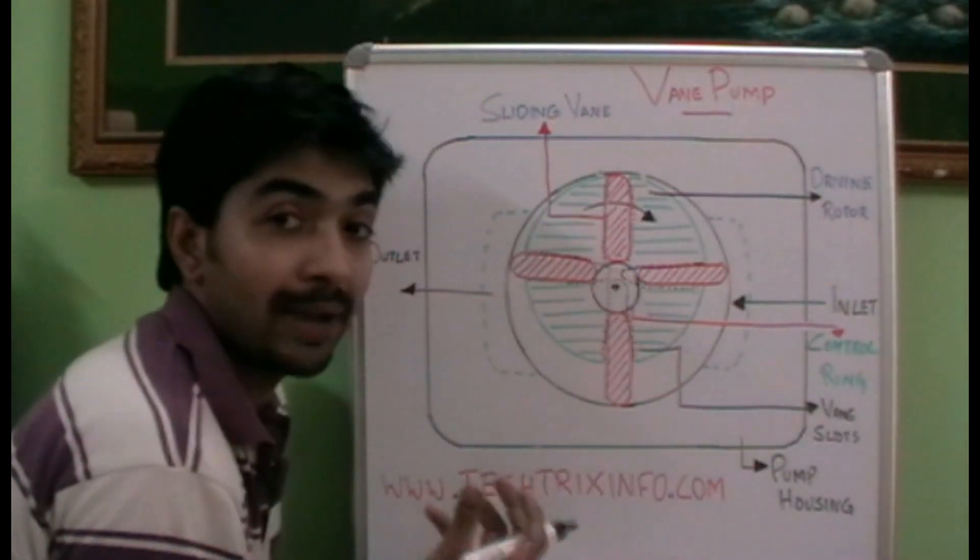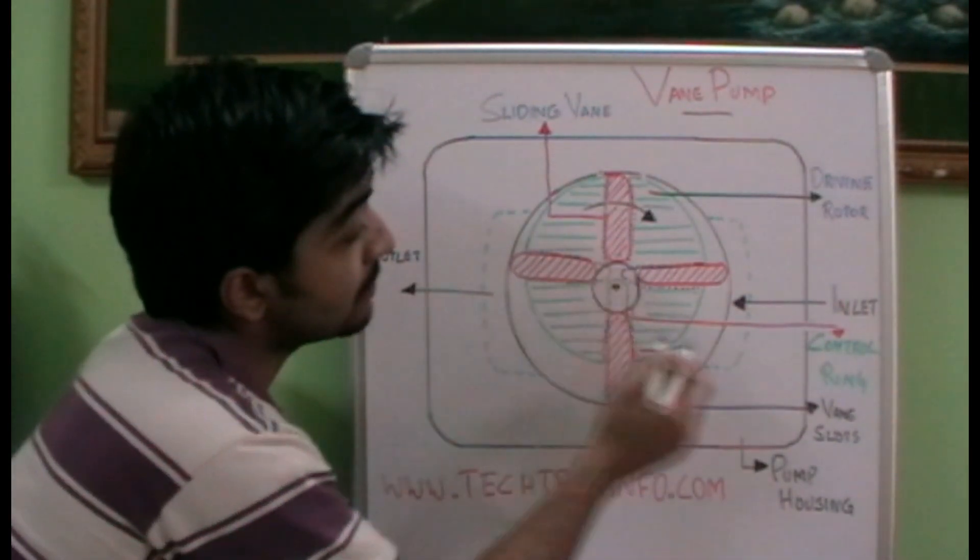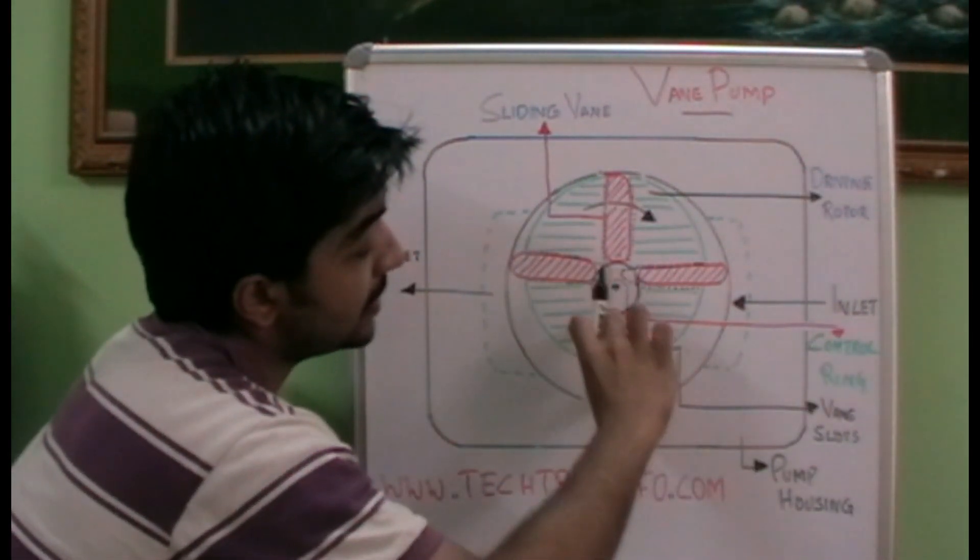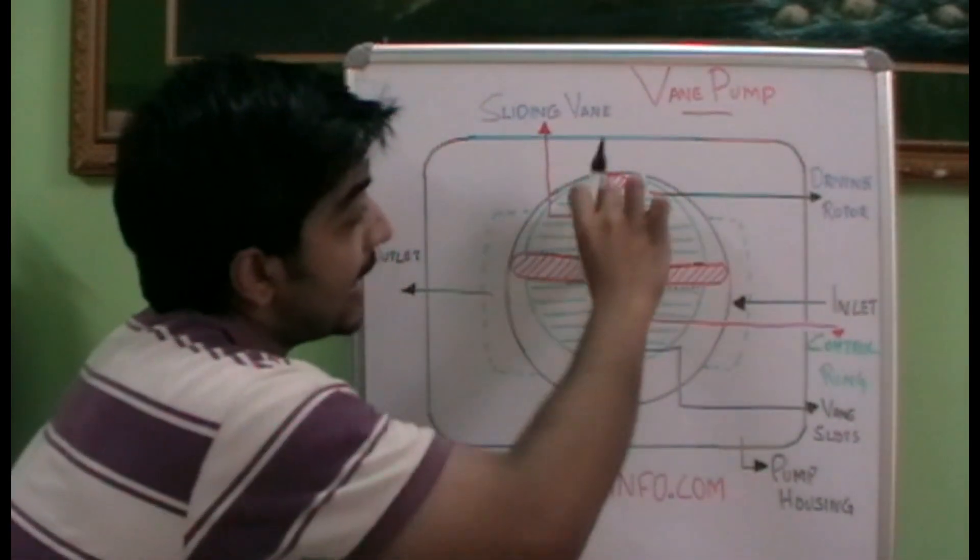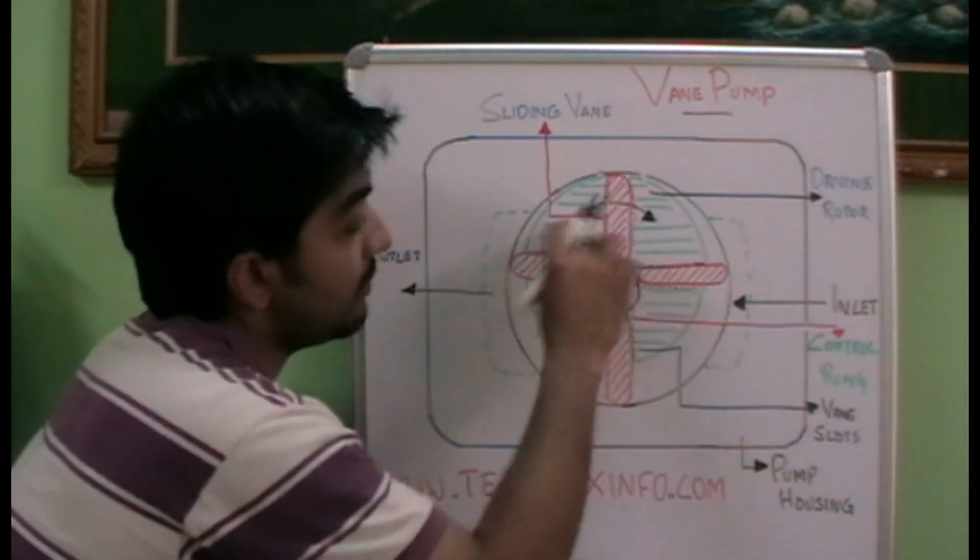That's how a vane pump actually works. And you can see how the vanes move due to this control ring placed over here. These vanes are supposed to slide to and fro through these slots inside the driving rotor.